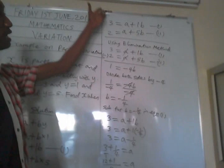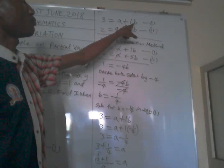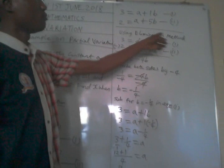Then we solve it using elimination method. 3 is equal to a plus 1b. 2 is equal to a plus 5b.